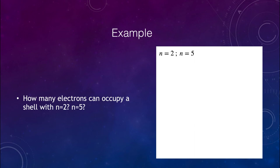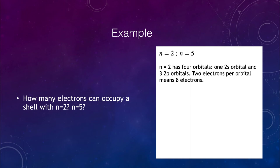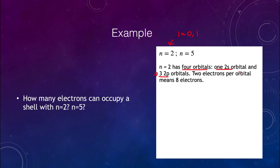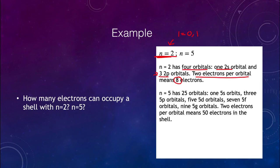Let's look at an example: how many electrons can occupy a shell with n equals two? n equals two has four orbitals: one 2s orbital and three 2p orbitals. If n is two you can have l equals zero or one — zero gives the 2s orbital, one gives the 2p orbital, which is split into three by the magnetic quantum number. With two electrons per orbital, you can have a total of eight electrons in the n equals two level.